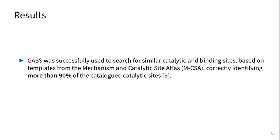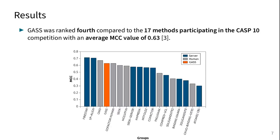GAS was successfully used to search for similar catalytic and binding sites based on templates from the MCSA, correctly identifying more than 90% of the catalytic sites. GAS was ranked fourth compared to 17 methods participating in the CASP 10 competition with an average MCC value of 0.63.